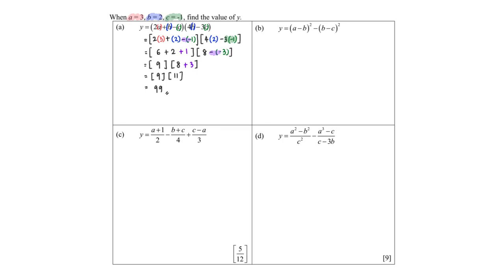Now for part b. Again, this is always a reminder for myself to make sure that I put brackets every time I substitute a value in. So this one will be: my a is 3, minus my b which is 2, the whole thing squared, minus my...